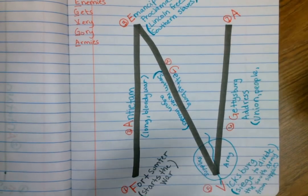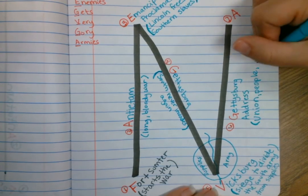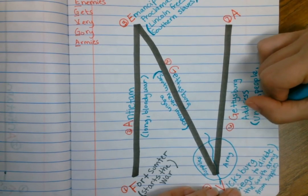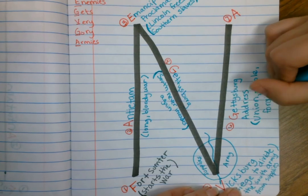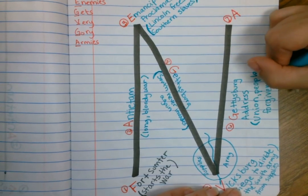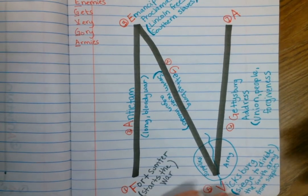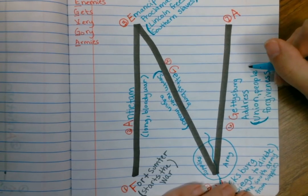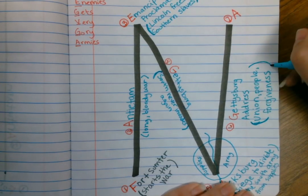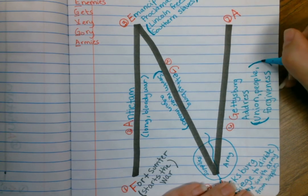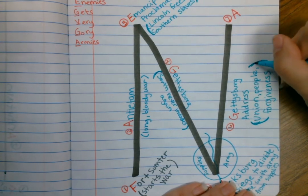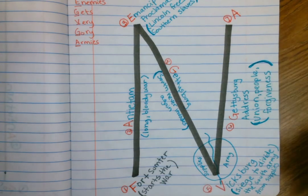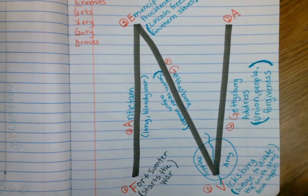And then finally, he starts to really talk about forgiveness, that we are one country and we need to forgive each other. And so this speech becomes the basis for his ideas in Reconstruction and how the South needs to be forgiven and rebuilt at the end of the war.